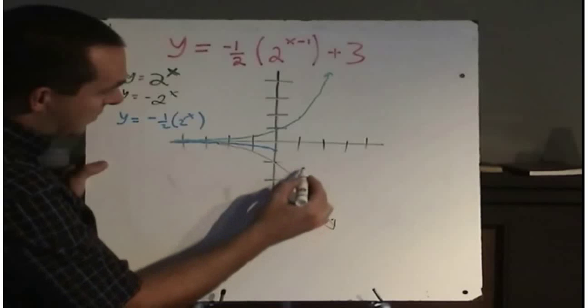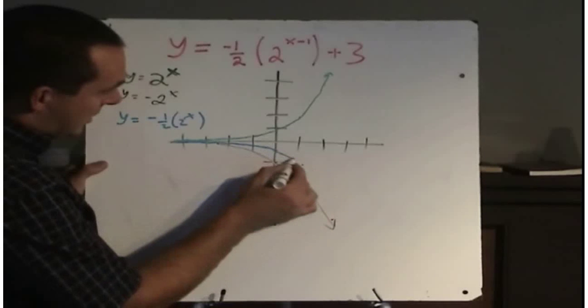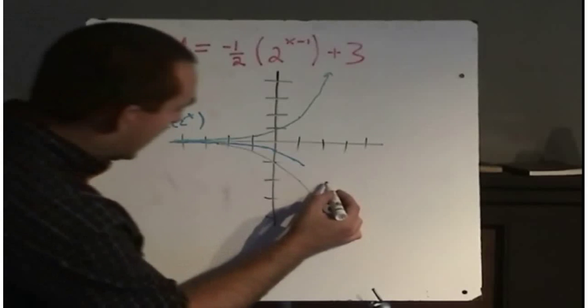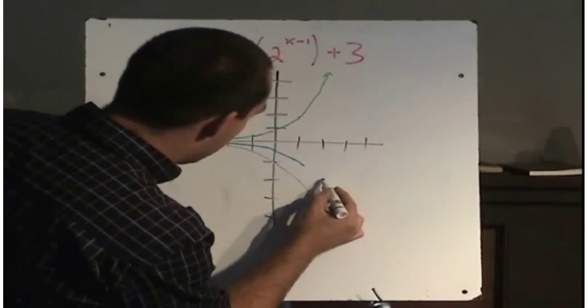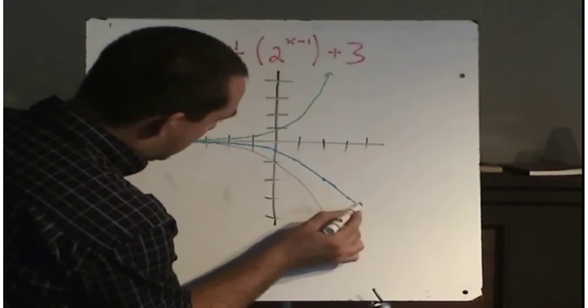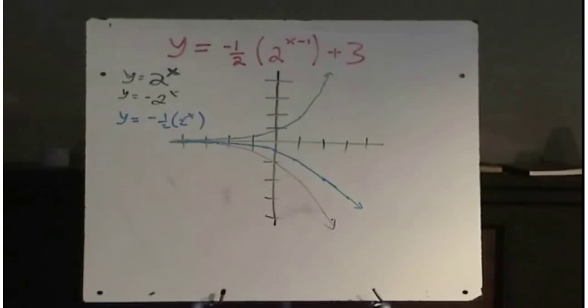Here's y value of negative 2. Half of that is negative 1. Here's a y value of negative 4. Half of that is negative 2. Okay, so there is the graph vertically compressed by a half.